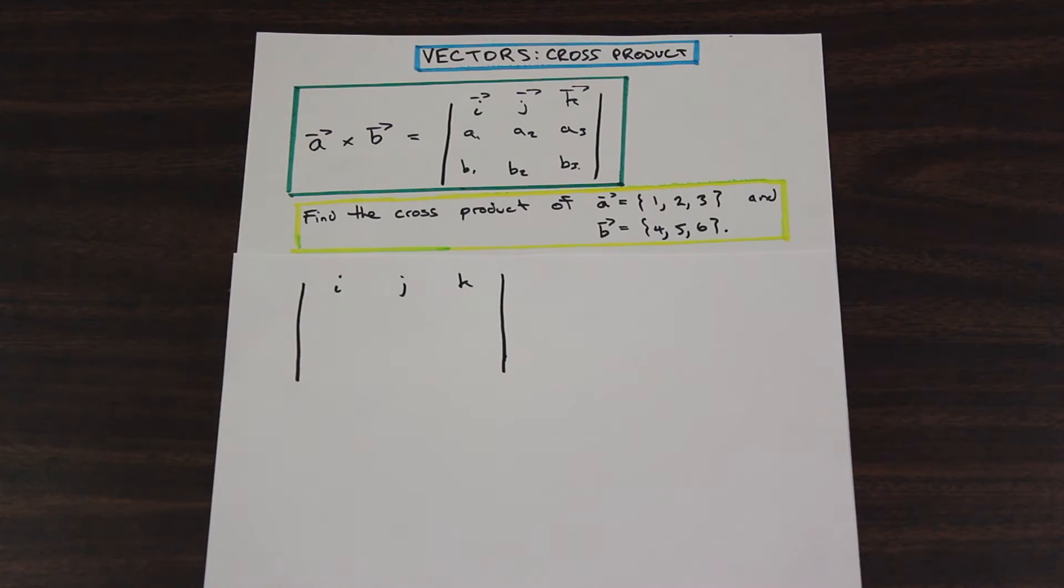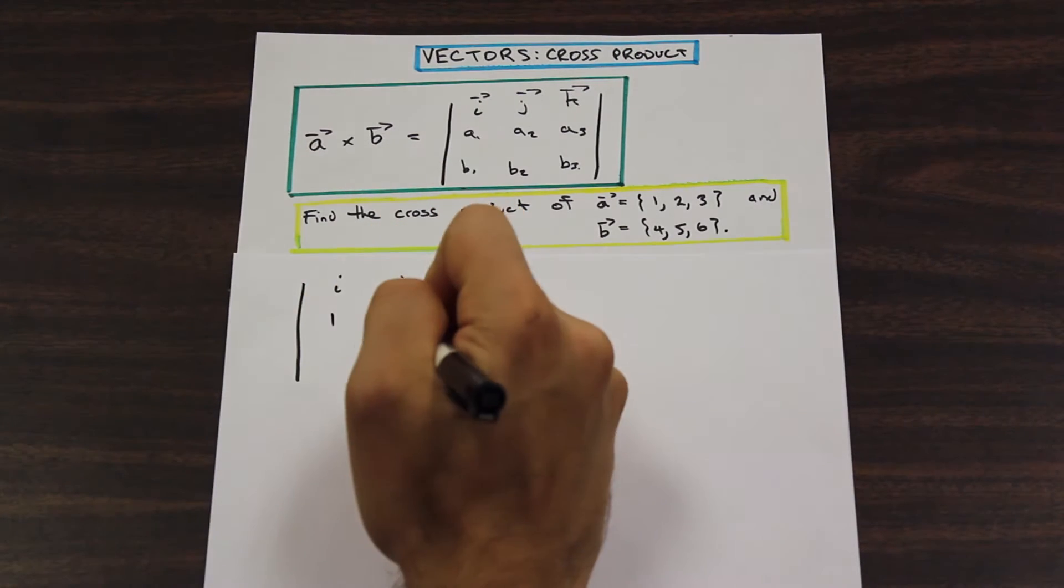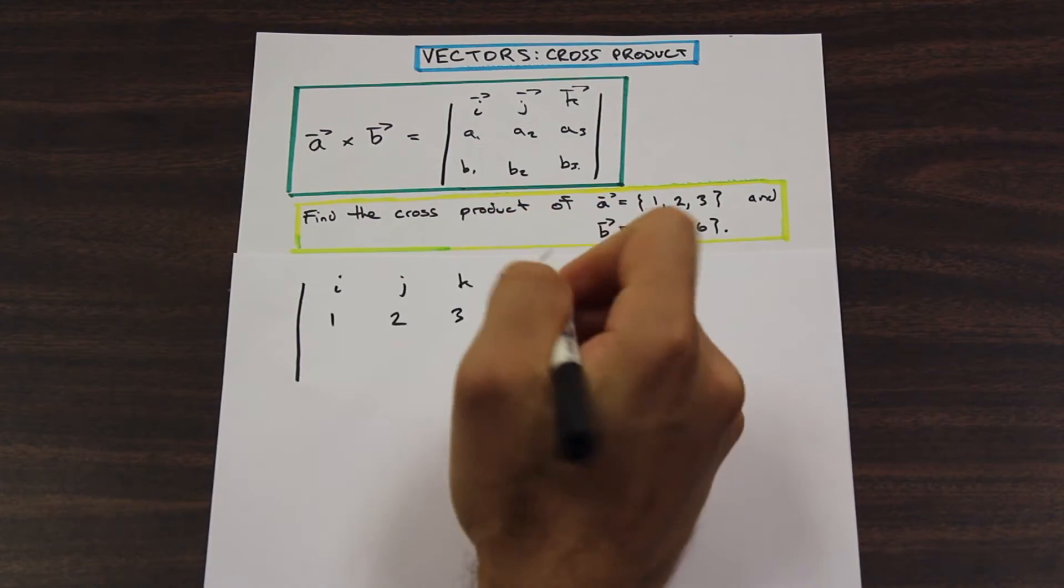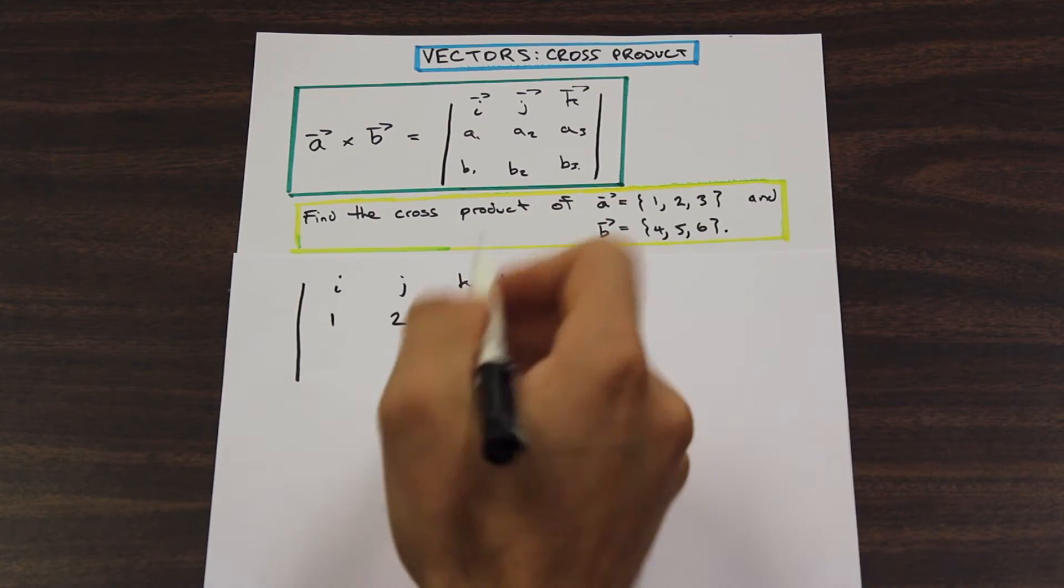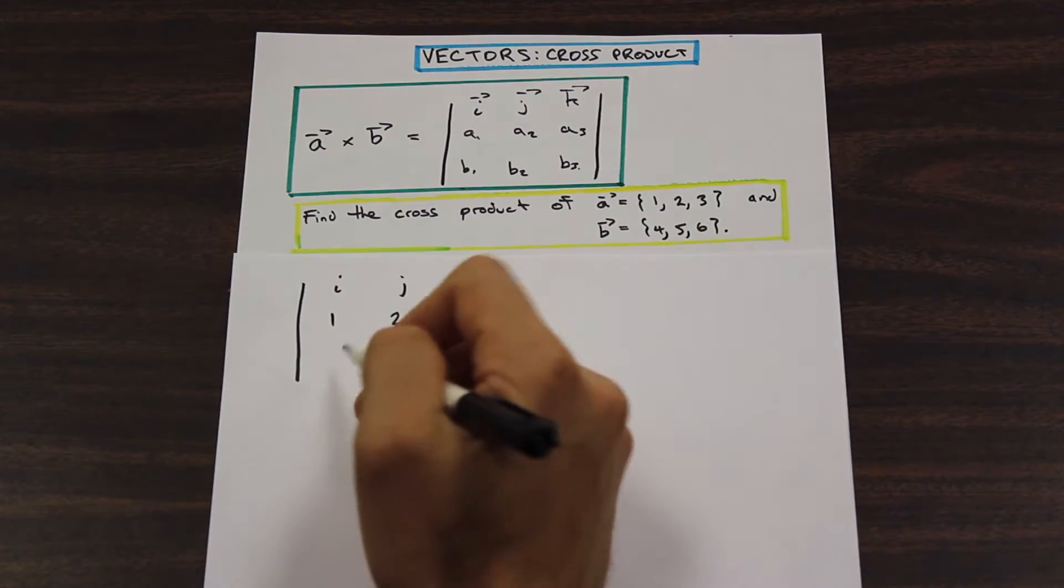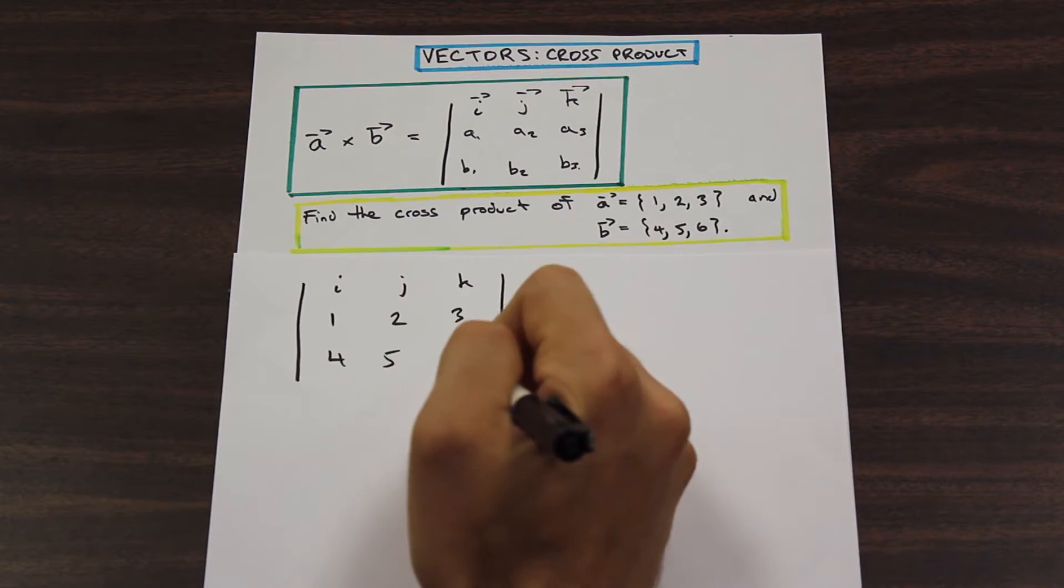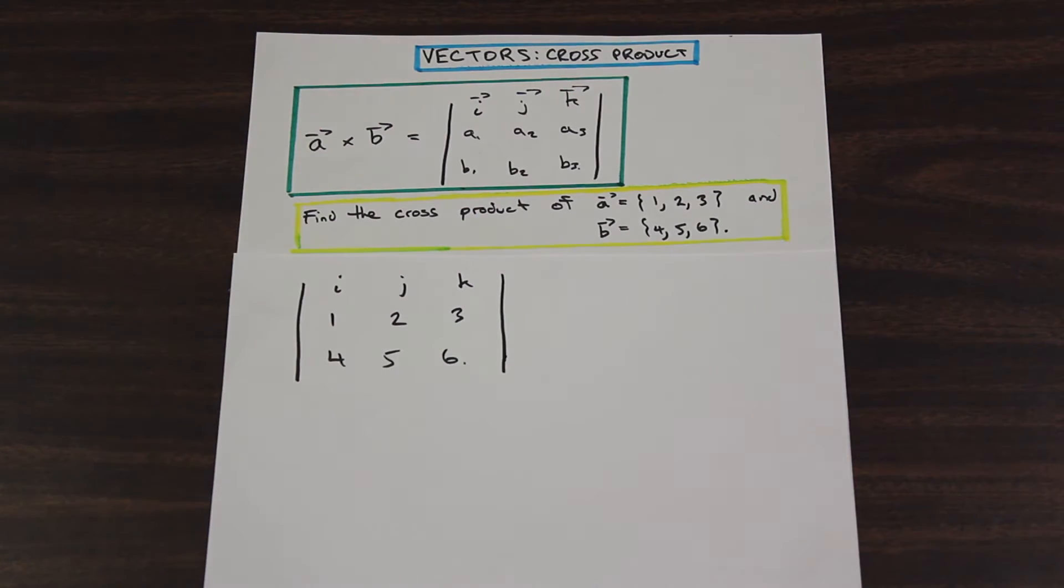And we're going to take our first vector A, and we're going to write our position vector, we're going to write the coordinates as follows, just like I did there. Second vector B is going to go right below that, perfect. Nice and simple.